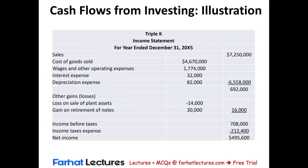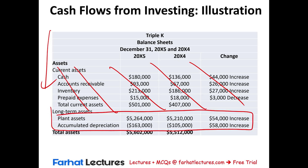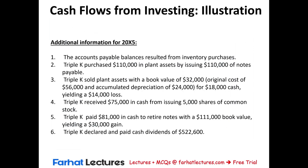We're going to look at the previous example we started with, Triple K. We are given the income statement and balance sheet. We're already done with current assets because we used those accounts to prepare the operating activities. Here we're going to focus on long-term assets. Item 1 dealt with operating activities — that's out. Item 2: Triple K purchased $110,000 in plant assets by issuing $110,000 in notes. Item 3: Triple K sold a plant asset with a book value of $32,000, original cost of $56,000, accumulated depreciation of $24,000, sold for $18,000.